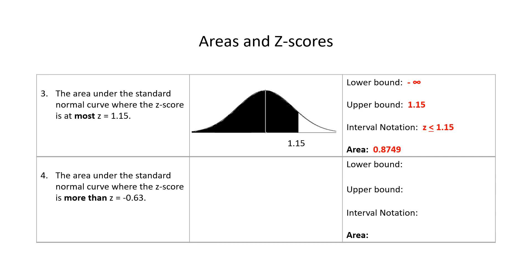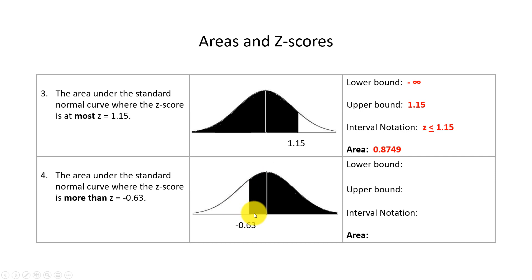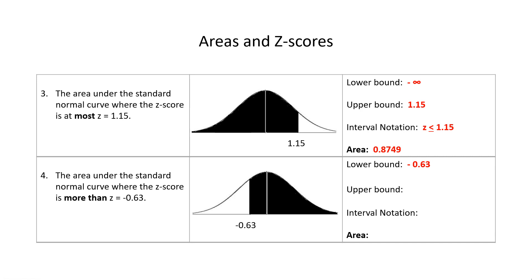Number 4: find the area that is more than z equals negative 0.63. "More than" means area to the right. From the picture, this will be more than 50% because the right half alone is 50% and we're adding more. The lower bound is negative 0.63 and the upper bound is positive infinity; the inequality notation is z greater than or equal to negative 0.63. We do 1 minus what's in the table and get 0.7357, which agrees with our picture.